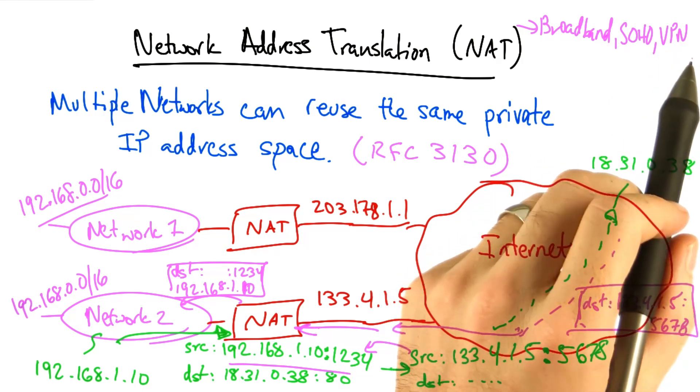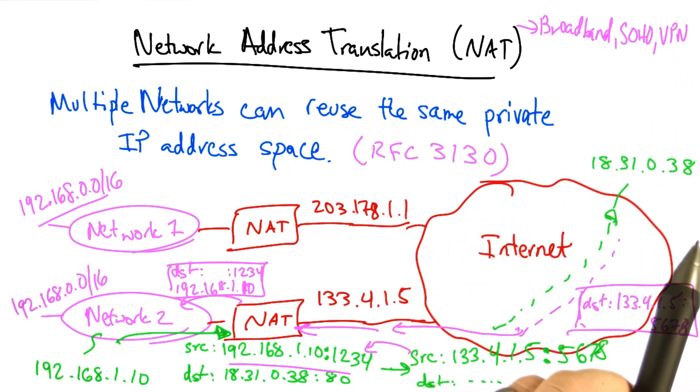NATs are popular on broadband access networks, small or home offices, and VPNs. There's a clear savings in IPv4 address space, since there can be many devices in one of these private networks. And yet, all of the devices that are behind the NAT only use up one public IP address.